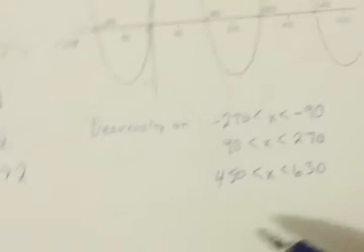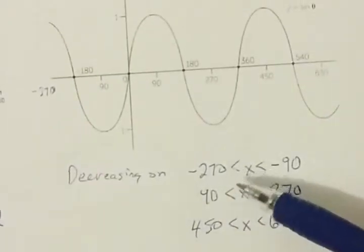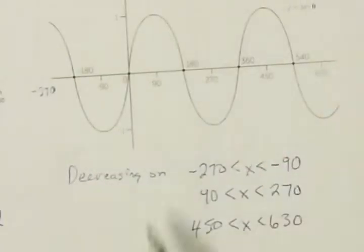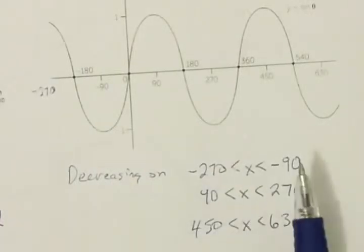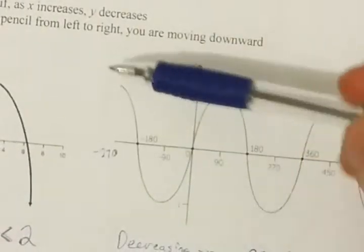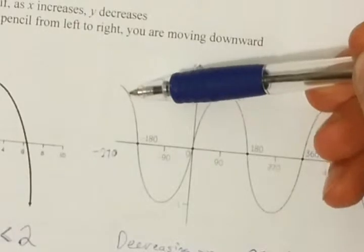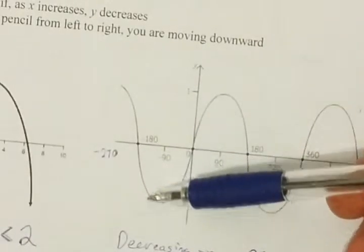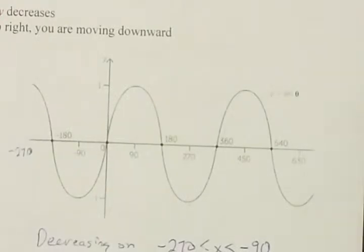You can see how complicated this gets in terms of writing these, but it's the same formula every time. Your lower number goes here, your higher number goes here, and you're figuring out where your graph is going downward as you move from left to right. Once we get to 630, it looks like it tails up a bit — we'll figure that out later.